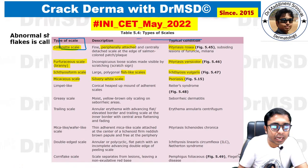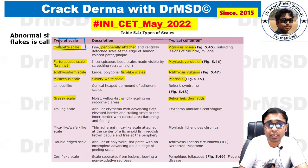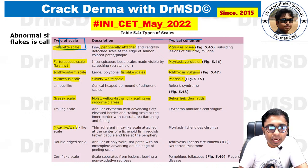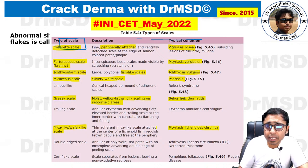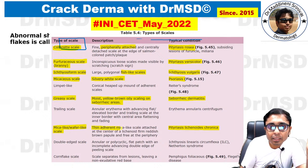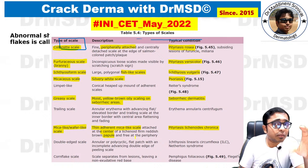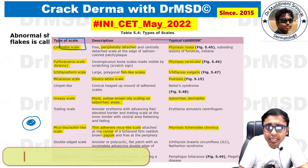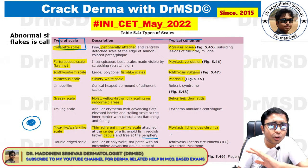Greasy scale is important for examination purposes and is seen in seborrheic dermatitis — moist, yellow-brown, oily scaling over seborrheic areas. Mica-like or wafer-like scale is seen in Pityriasis lichenoides chronica (PLC). In PLC, a thin adherent mica-like scale is attached at the center of a lichenoid firm reddish-brown papule and free at the periphery — exactly opposite to the collarette scale.